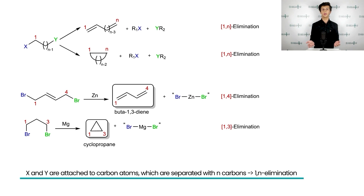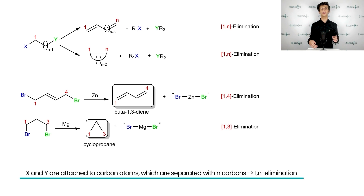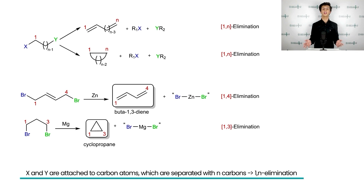The first reaction represents the dehydrogenation of 1,4-dibromobutane in the presence of metallic zinc. Let us number the carbon atoms: 1, 2, 3, and 4. You can clearly see that X and Y are attached to the first and the fourth carbons. The major product of this reaction is buta-1,3-dyne. The second example of 1N eliminations leads to the formation of a cyclic product, namely cyclopropane.